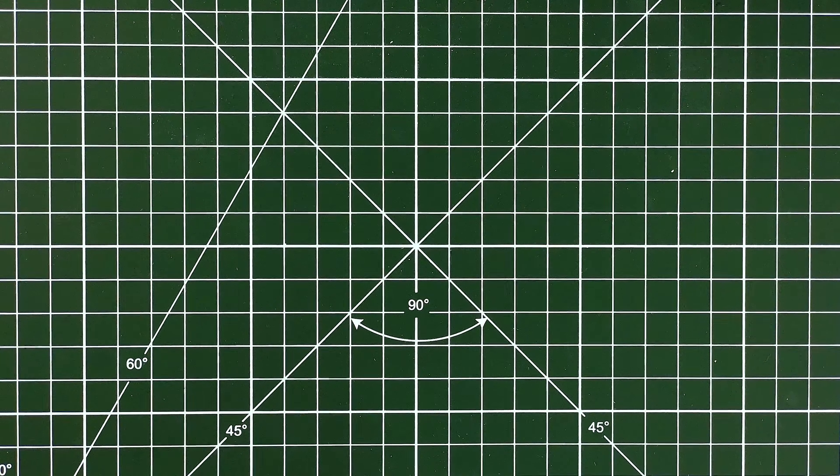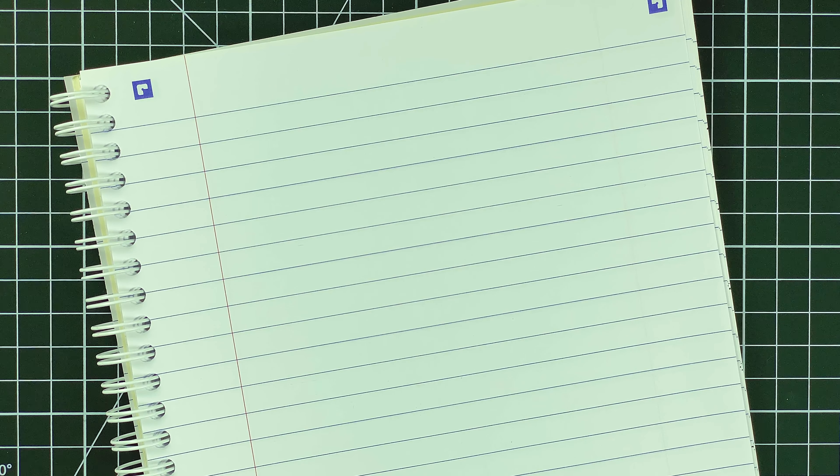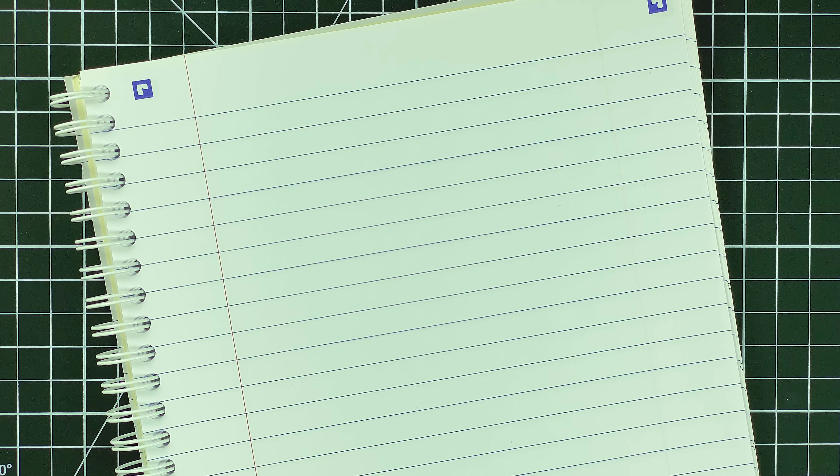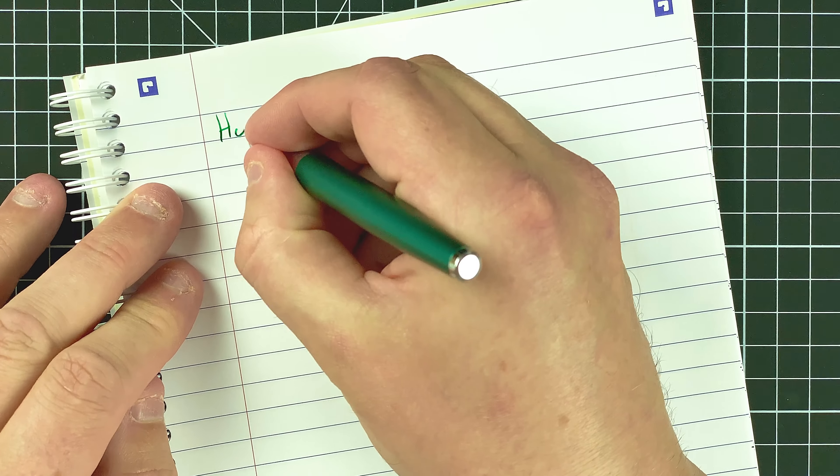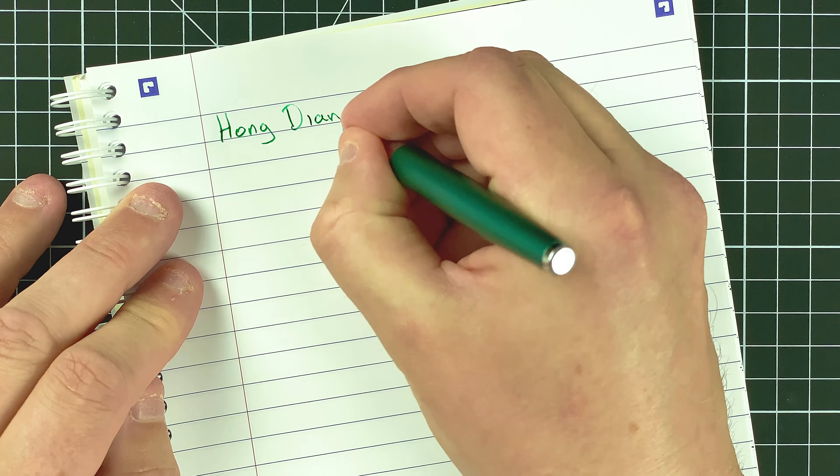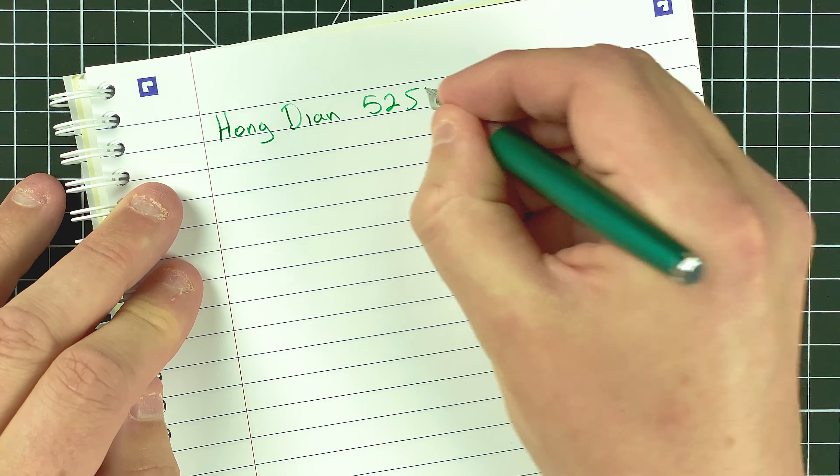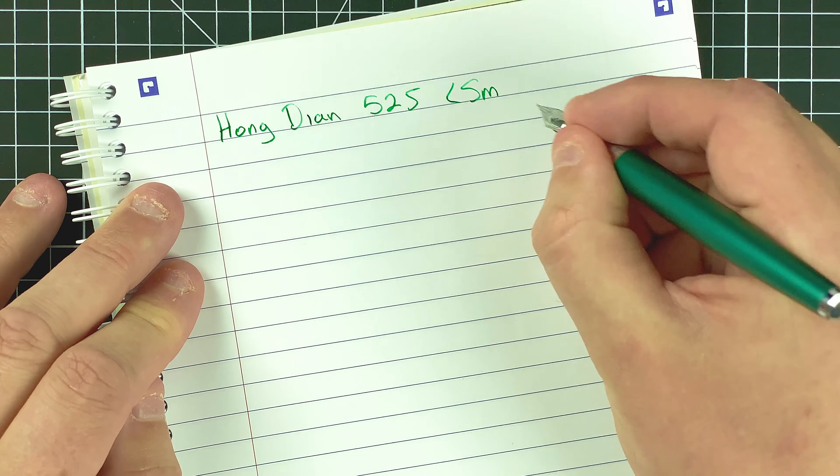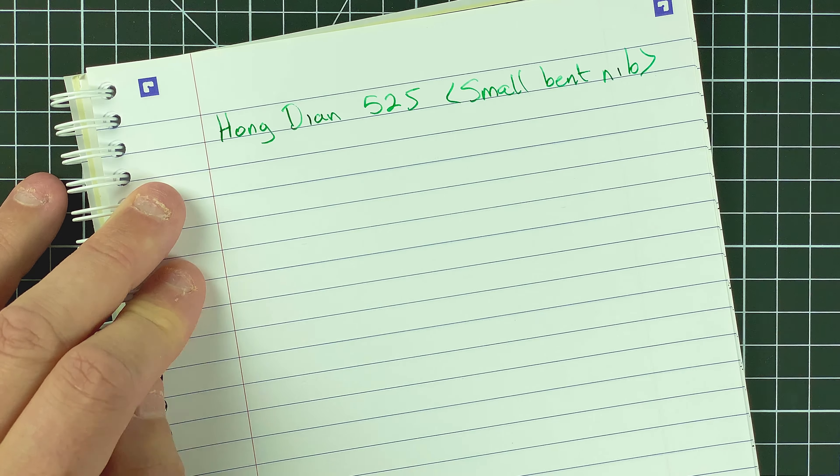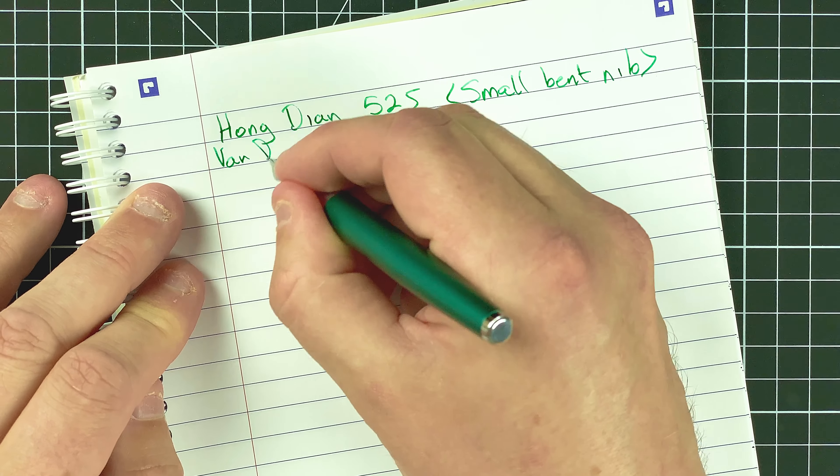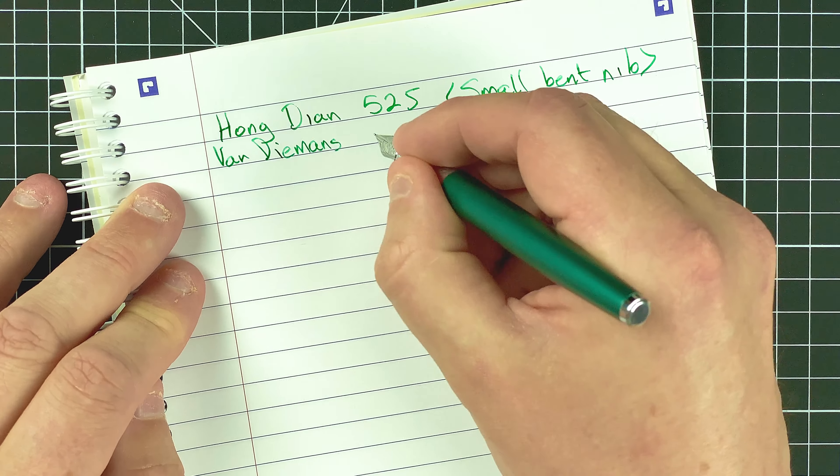So let's go and have a look at our writing samples. The paper I'm using is by Oxford and it uses the optic white paper. Nice fountain pen friendly paper. So we're going to start with the 525. So as I said, this one, it's the one with that bent nib. So this is a Hongdian 525 and it's got a small bent nib.